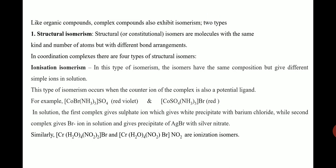If you take these two complexes in solution, the first complex gives sulfate ion, forming a white precipitate with barium chloride. The second complex gives bromide ion in solution and forms a precipitate of AgBr with silver nitrate. These two complexes exhibit ionization isomerism.